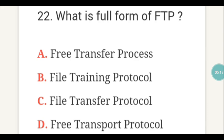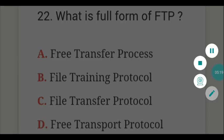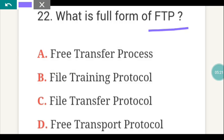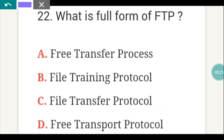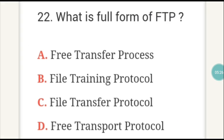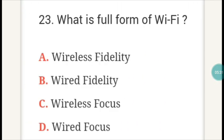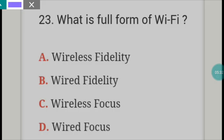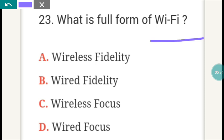What is the full form of FTP? FTP full form is C — File Transfer Protocol. What is the full form of WIFI? WIFI full form is A — Wireless Fidelity.